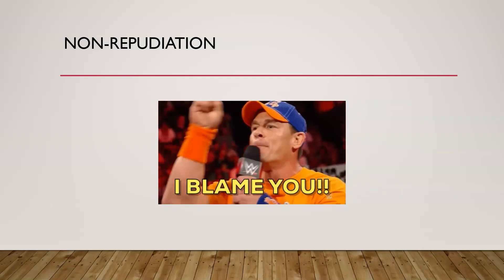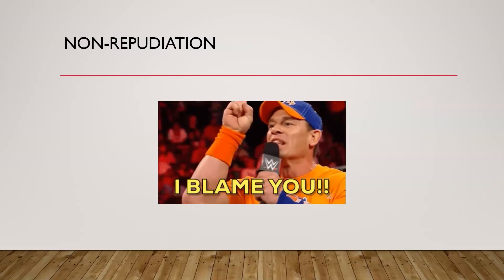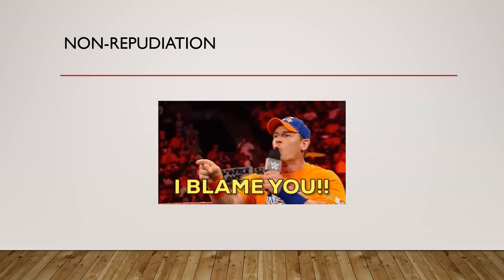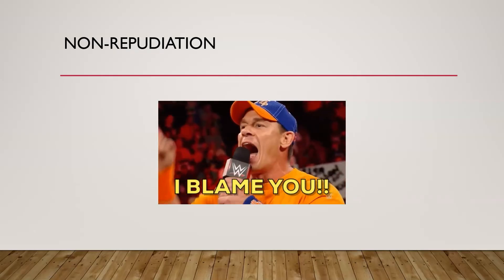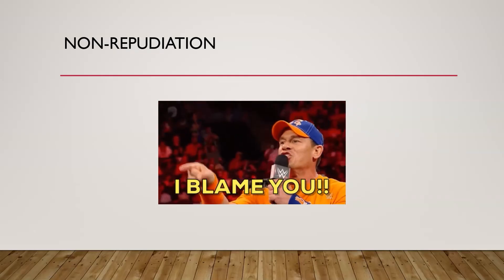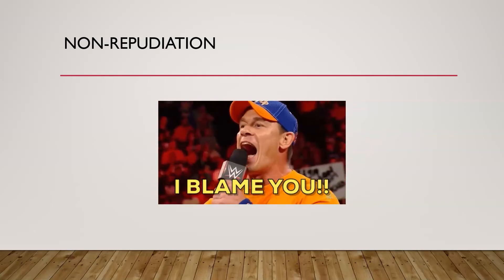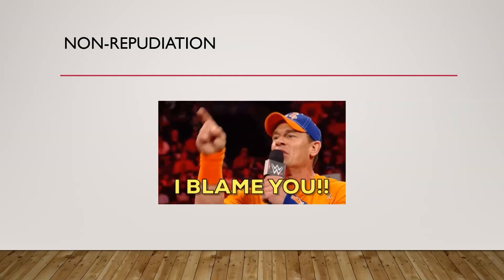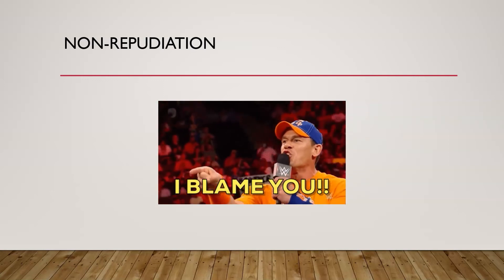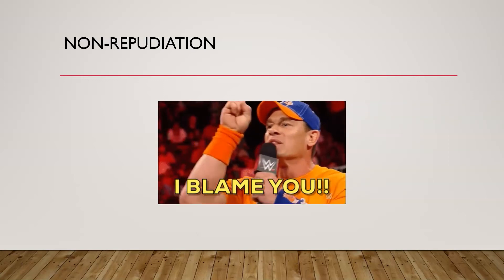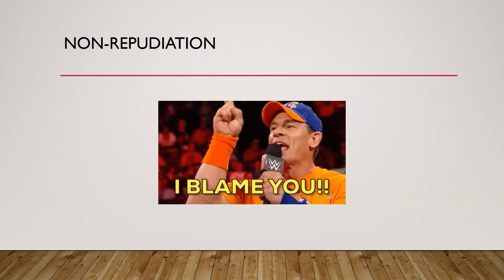Maybe there's also a security camera showing you were at that system when the email was sent. So even if someone claims a hacker did it, we've got proof it was them. The ways we can implement non-repudiation include digital signatures, timestamping, and audit logging — basically getting proof in advance that a specific person, system, or application performed a given action.